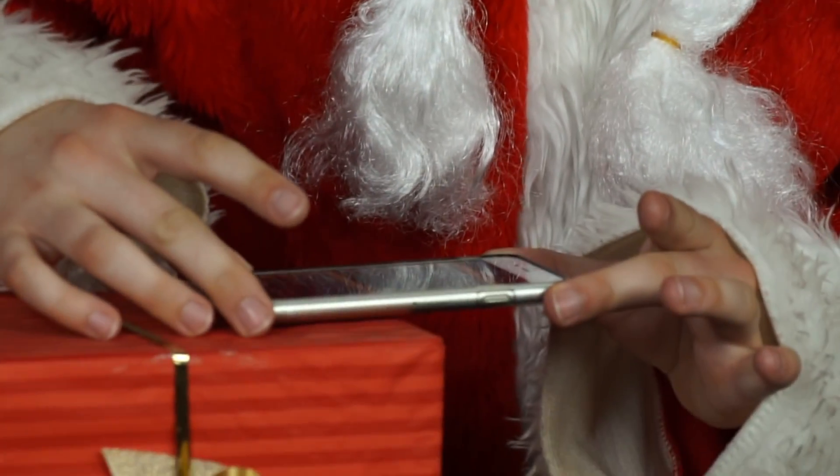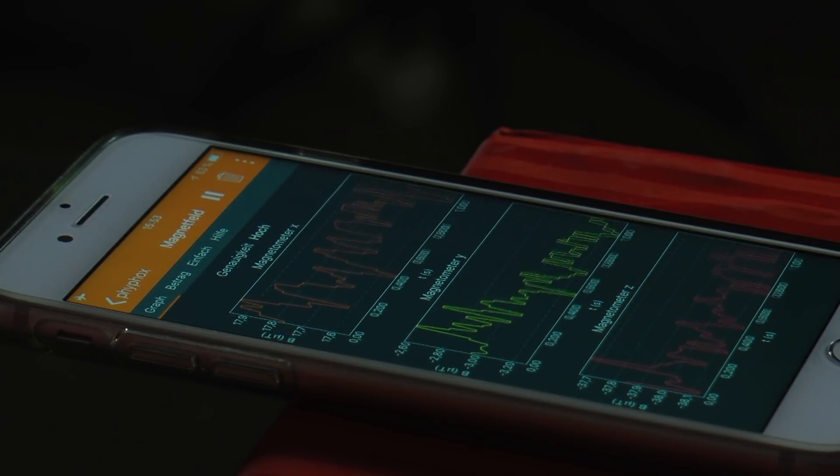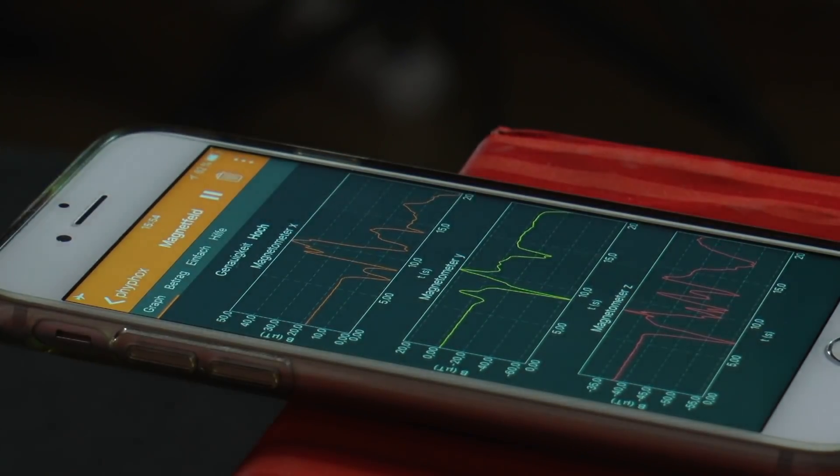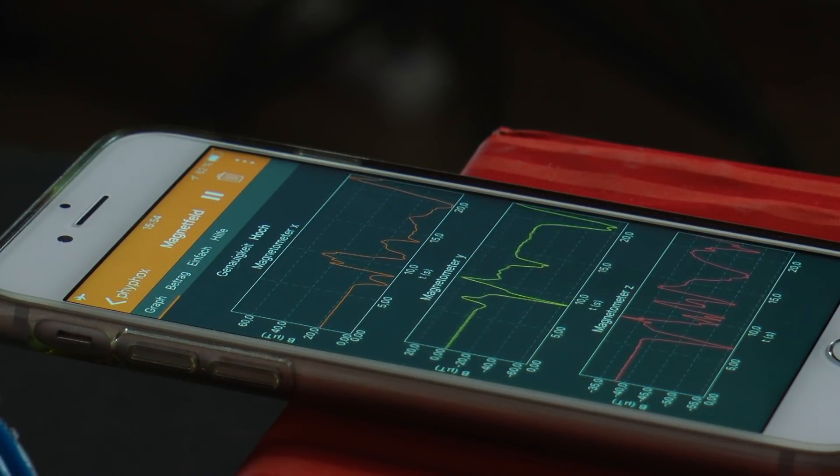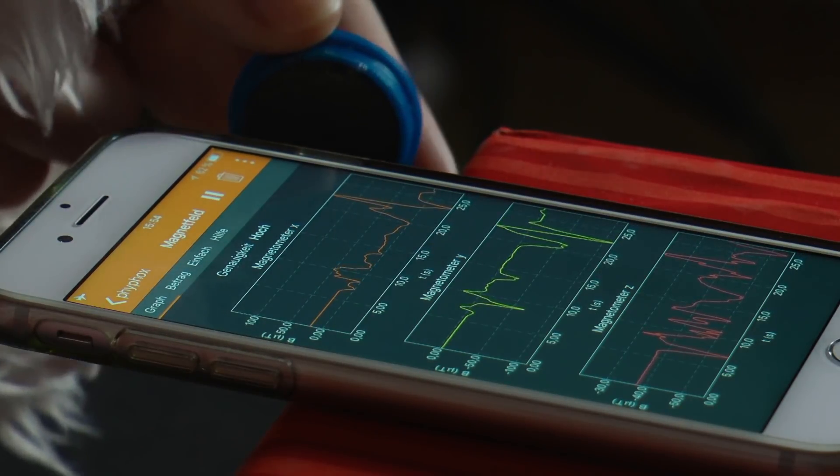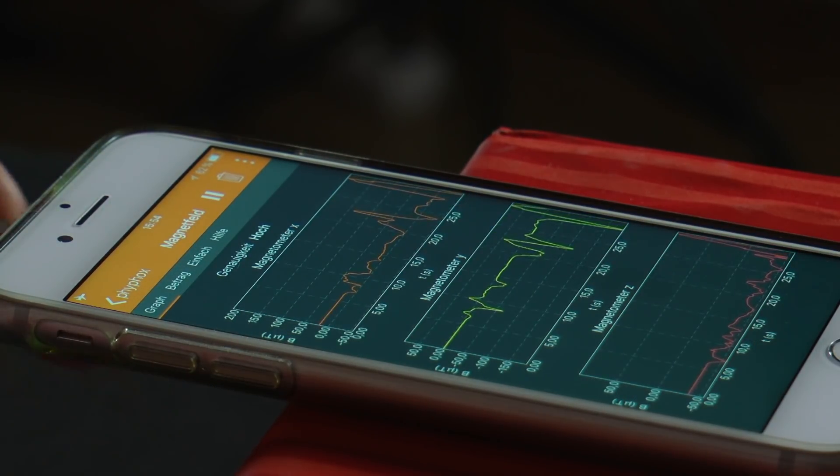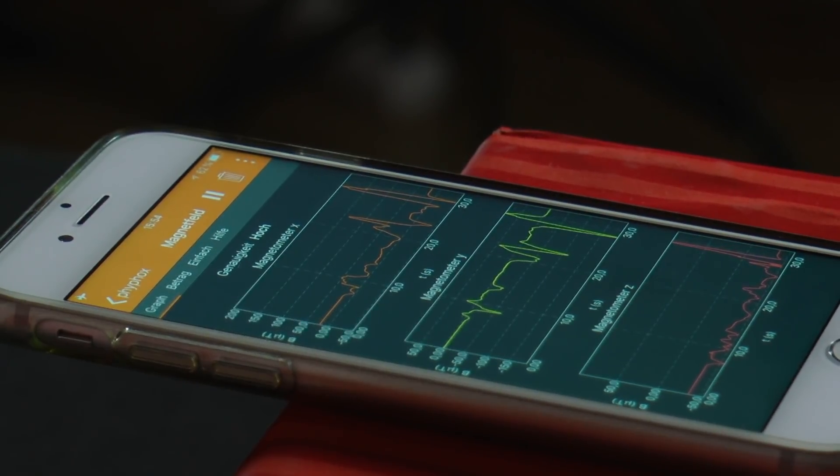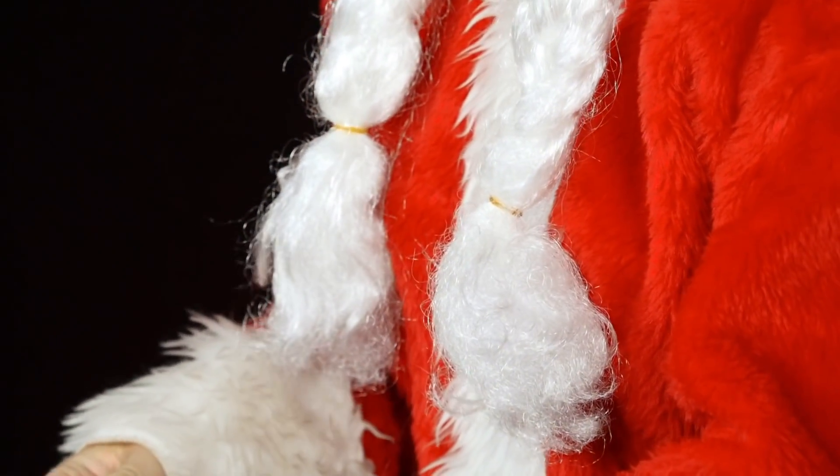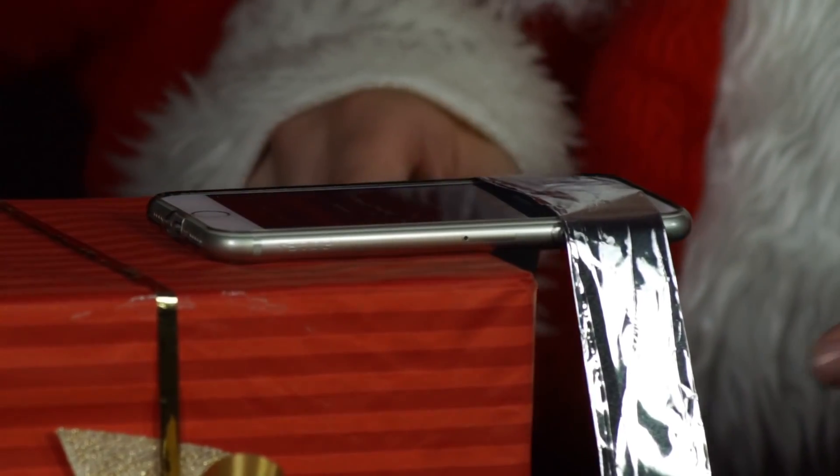In the app she starts the magnetic field function. She uses a refrigerator magnet to test how the app works and places the strip over the mobile phone like a loop as shown in the film.